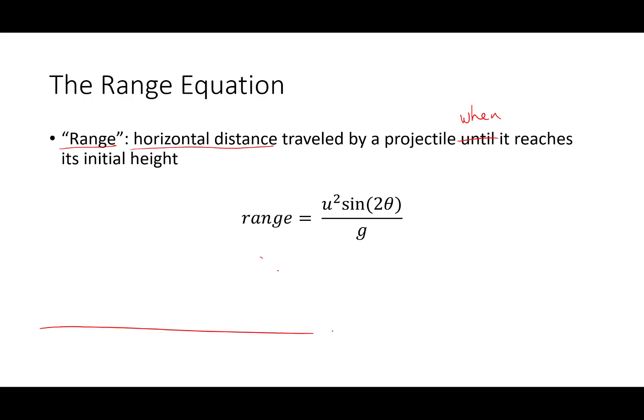So if we think about firing a projectile on flat ground at some angle, we'll call that angle theta. We call its initial velocity u. It forms a parabolic arc and it will hit the ground here. The range then is that horizontal distance.